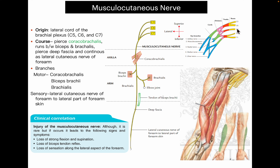In its course, it pierces the coracobrachialis muscle in the axilla and also supplies coracobrachialis. It then runs between the biceps brachii and brachialis muscles, supplying both of these muscles — biceps brachii and brachialis — as well as the elbow joint.